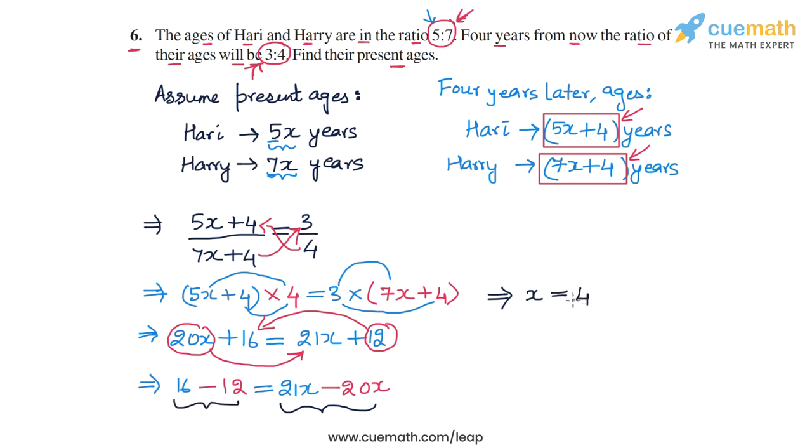And now it's easy to calculate the present ages of Hari and Harry. Hari's present age is 5x years, so his present age is 5 into 4 or 20 years. And Harry's present age is 7x years, so 7 into 4 or 28 years.